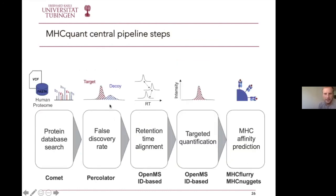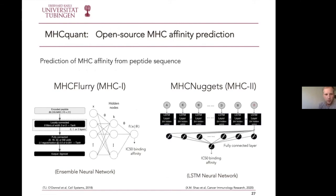Finally, an MHC affinity prediction is carried out. We applied two open-source modern neural network architectures called MHCFlurry and MHC Nuggets. We chose these predictors because they are completely open source, not licensed, include a variety of MHC alleles, and in published benchmarks they perform quite similarly to well-established licensed tools.